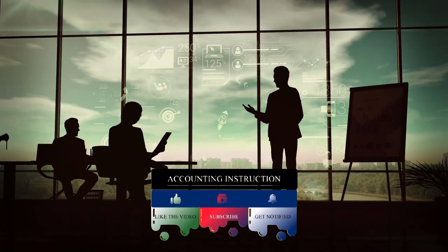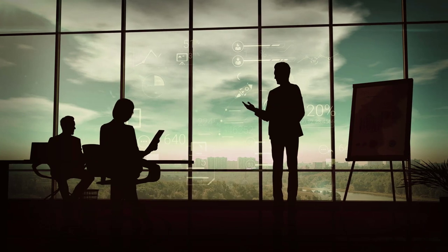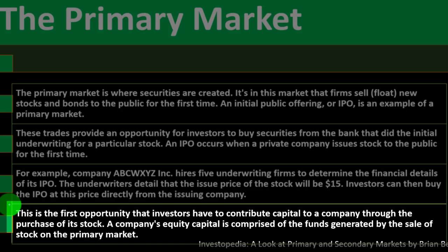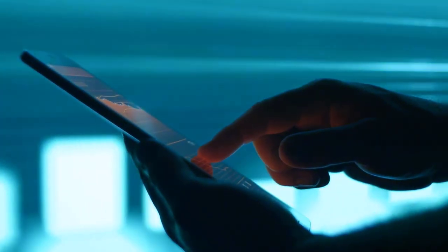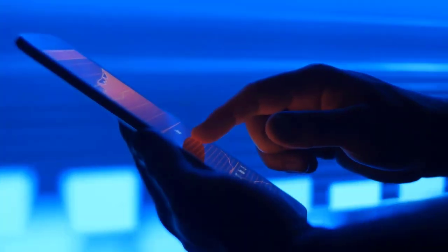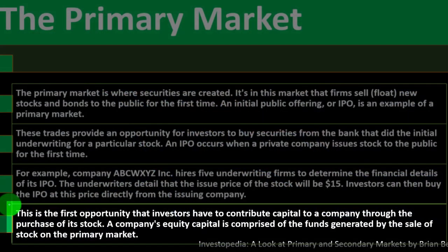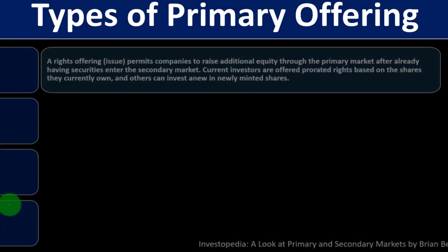This is the first opportunity that investors have to contribute capital to a company through the purchase of its stock. A company's equity capital is comprised of the funds generated by the sale of stock on the primary market. From an accounting standpoint, the company is increasing its cash and increasing equity — assets minus liabilities equals equity — representing the stockholders' share of what the company has, as opposed to third-party liabilities.